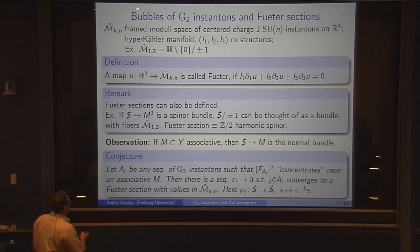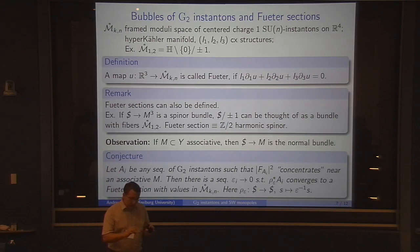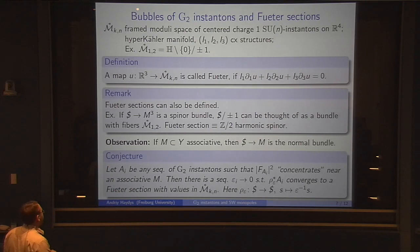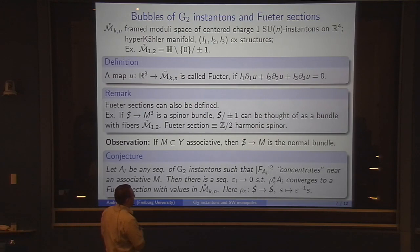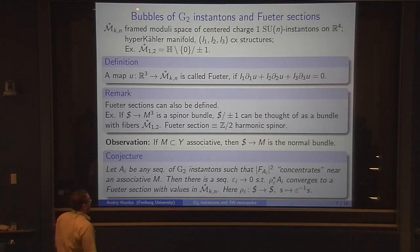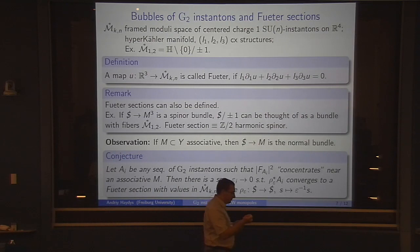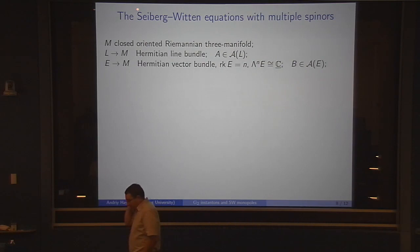An observation which will be useful is that if you have an associative submanifold in Y, then the normal bundle of M in Y is in fact the spinor bundle. It may be twisted, but this twist won't play any role in this talk. The conjecture is as follows: suppose you have any sequence of G2 instantons such that you see a bubble along an associative submanifold M, which you may describe as the energy density concentrates near M. Then after you zoom in appropriately in the neighborhood of M, the sequence will converge to a Fueter section with values in this moduli space of anti-self-dual instantons.